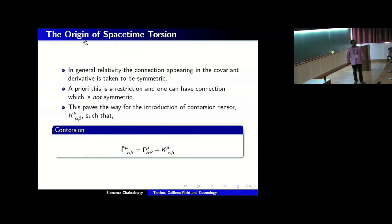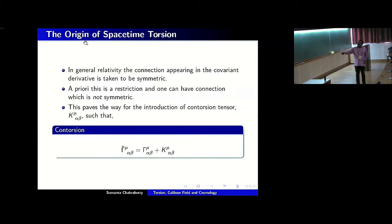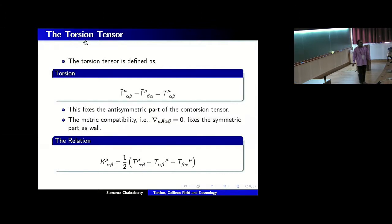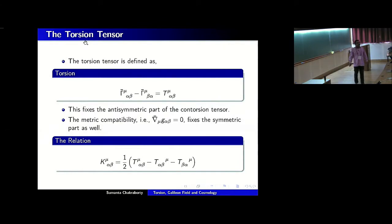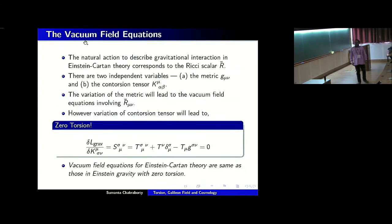One essential ingredient to the spacetime structure we are missing is torsion. In general, there is no reason to believe that the connection we work with is symmetric — that is essentially a condition we impose in textbooks. You can have an antisymmetric part as well. In general, any connection can be written as the standard Christoffel symbols plus a tensor K^μ_αβ, the contortion tensor. The antisymmetric part of this tensor defines the torsion tensor T^μ_αβ, which is antisymmetric in its lower two indices α and β. The symmetric part is fixed by imposing metric compatibility — that the metric is covariantly conserved — and then the torsion tensor determines everything.